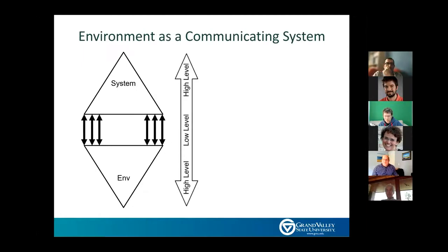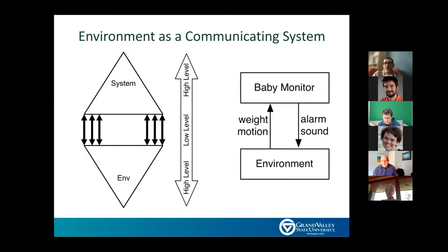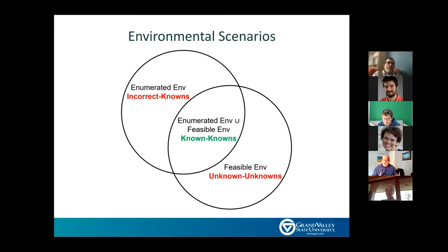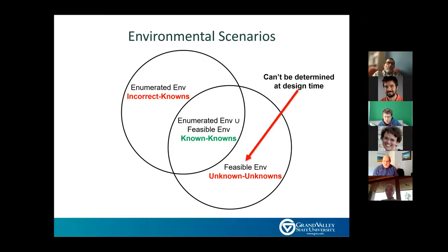Instead of trying to find and enumerate problems, we look at the environment as a communicating system. We have a system, a simplified model of the environment — in the paper, a baby monitor creating an alarm sound and an environment creating motion and weight. From this enumerated environment we have a few possibilities: things enumerated but that never happen are incorrect knowns; things enumerated that do happen are known knowns; and things we can't determine at design time or that change at runtime are unknown unknowns — things not in our model but that do occur.